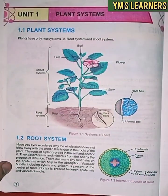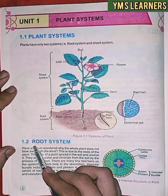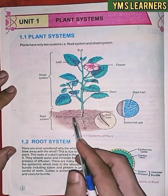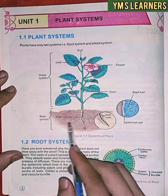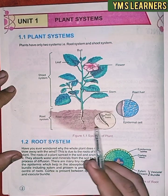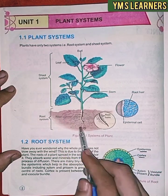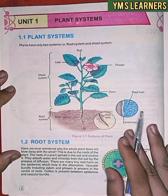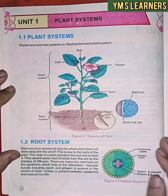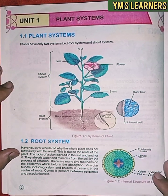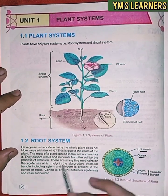The plant system consists of the root system and the shoot system. The root system includes primary, secondary, and tertiary roots.